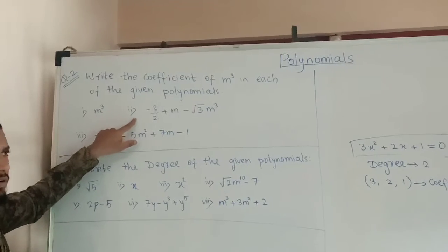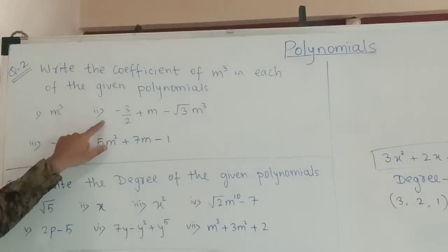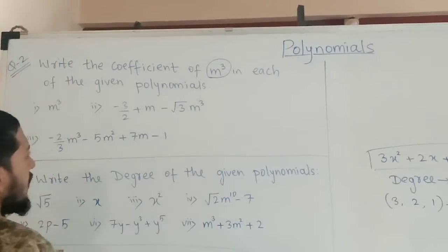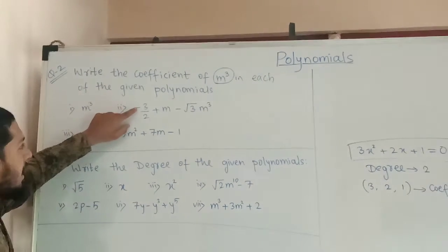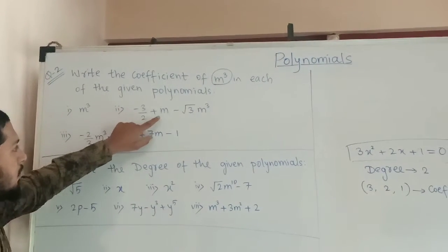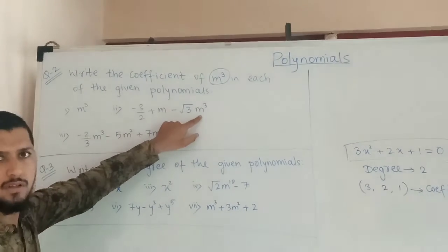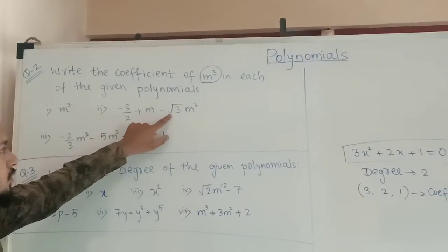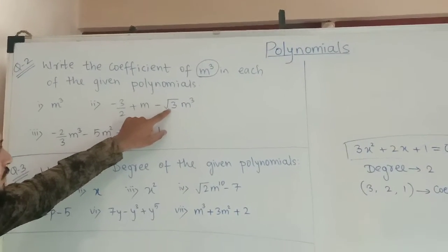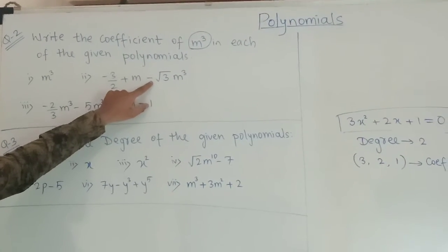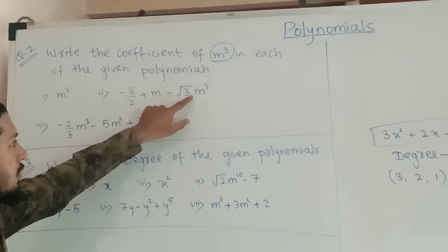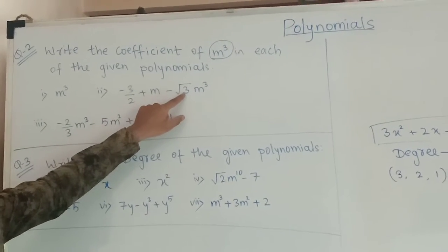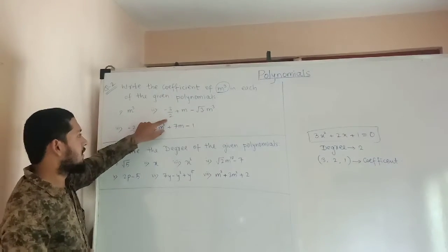In question number 2 we have to find the coefficient of n cubed only. The polynomial is minus 3 upon 2 plus m minus root 3 times n cubed. You can see the coefficient of n cubed is root 3, but the sign of root 3 is negative here. So the coefficient of n cubed will be minus root 3.